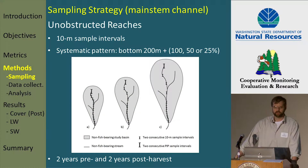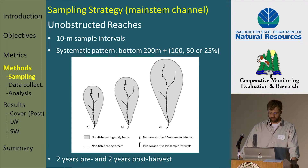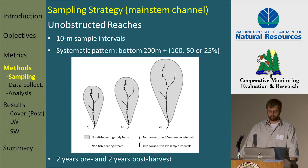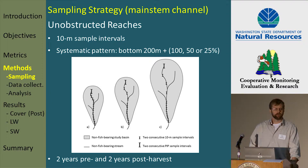Our primary sampling strategy involved 10-meter sample reaches, limited to the main stem channel. We always sampled the bottom or downstream-most 200 meters of all our sites, and then sampled a subset of the remainder of the channel depending on how large those basins were. For these variables we conducted surveys for each of two years pre-harvest and two years post-harvest.